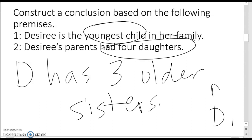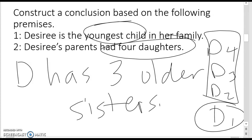So if there's daughter one, daughter two, daughter three, daughter four, she would be the youngest. She's the youngest child. So she has three older sisters. That would be my conclusion based off the two premises that I was provided.